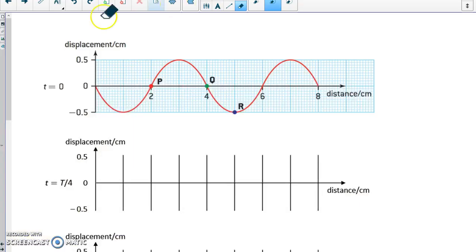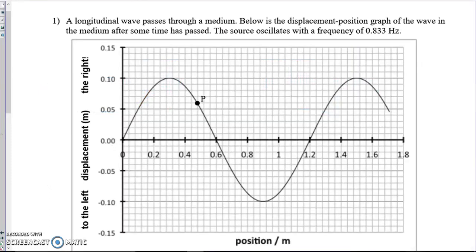That is exactly what these displacement distance graphs achieve. They tell us the displacement of every particle, and they identify the particles based on where they're located. What's their distance from the edge of the medium? Let's look at an example. Here is a displacement position graph. And it says, a longitudinal wave passes through a medium. This is on page 18 of our notes. Below is the displacement position graph of the wave, after some time has passed.